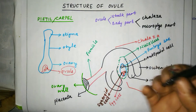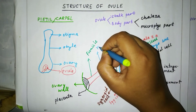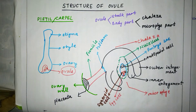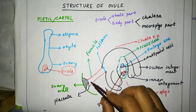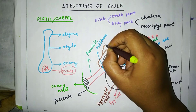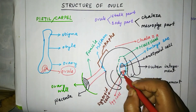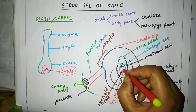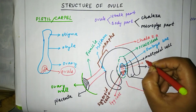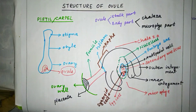The point of attachment of the funicle with the main body part is known as chalaza. The tissue of the funicle that is stretched over the body part is known as raphe. Between the antipodal cells and synergid cells, the secondary nucleus is present — this is the secondary nucleus. Thank you.